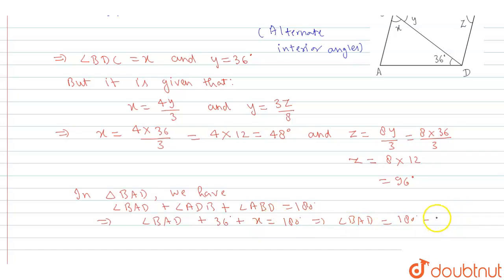So, after calculating, let's see. So, here we can write 36 plus 48. Okay, now angle BAD is equal to 180 degrees minus 6 plus 8 is 14, 14, 4 carry 1, 4, 3, 7, 1, 8, 84. Okay, so after solving it will be 96 degrees.